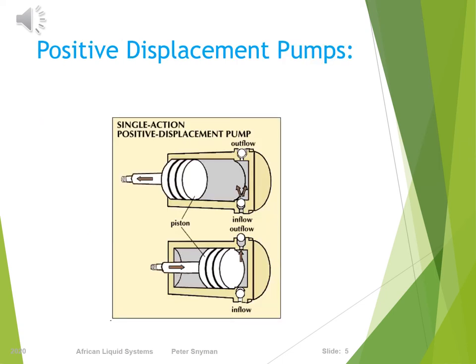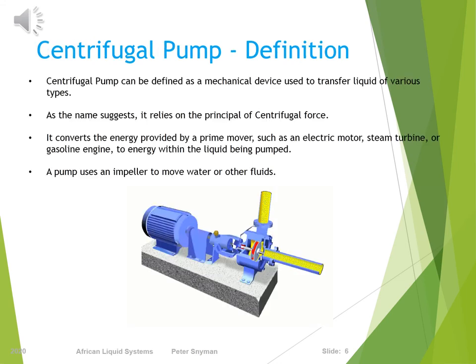Below is an illustration of a positive displacement type pump, in this case a piston pump. Below is an illustration of a standard single-stage centrifugal pump. As the name suggests, this pump uses centrifugal force to create velocity to media, which in turn creates pressure.